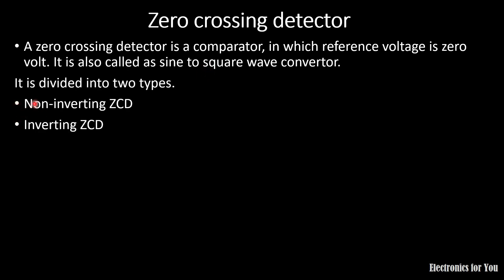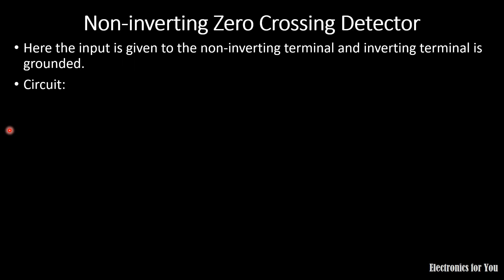Zero crossing detector has two types: one is non-inverting ZCD and the other one is inverting ZCD. The first one is non-inverting zero crossing detector. As its name suggests, the input is given to the non-inverting terminal and the inverting terminal is grounded.